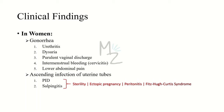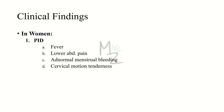If the infection ascends to the uterine tube or other parts of the female reproductive system, it will cause salpingitis or PID (pelvic inflammatory disease), which can result in serious conditions like sterility or ectopic pregnancy, and can sometimes cause peritonitis and Fitz-Hugh-Curtis syndrome. Fitz-Hugh-Curtis syndrome is infection of the liver capsule resulting in the formation of adhesions between the liver capsule and peritoneum — these are called violin-string adhesions. Symptoms of PID in women include fever, lower abdominal pain, abnormal menstrual bleeding, and cervical motion tenderness. IUD (intrauterine device) use increases the risk of progression to PID.